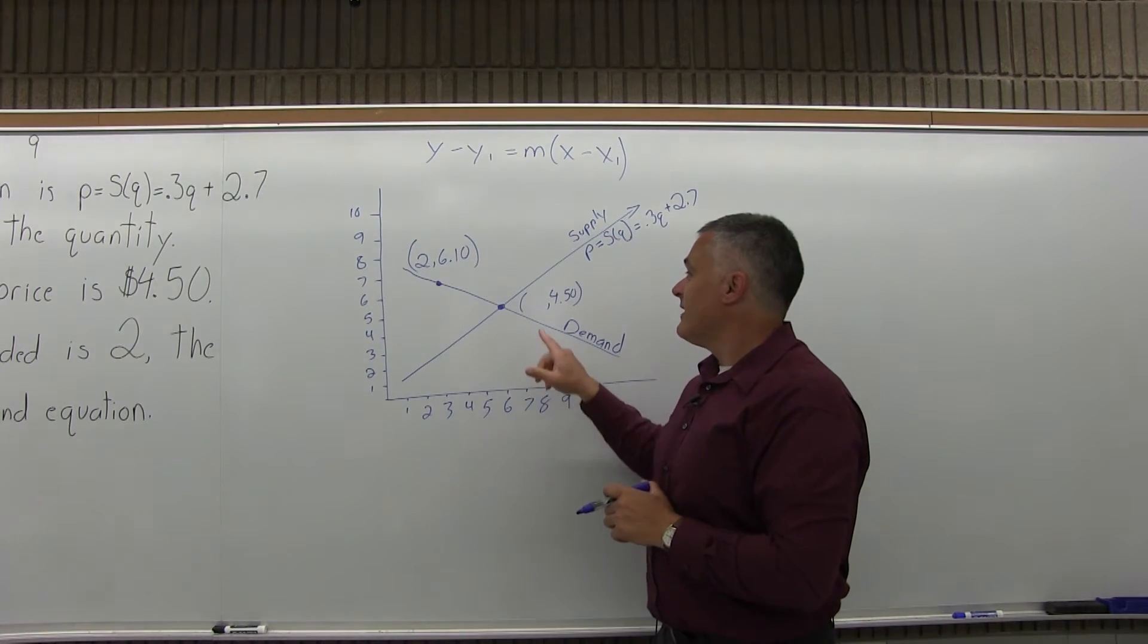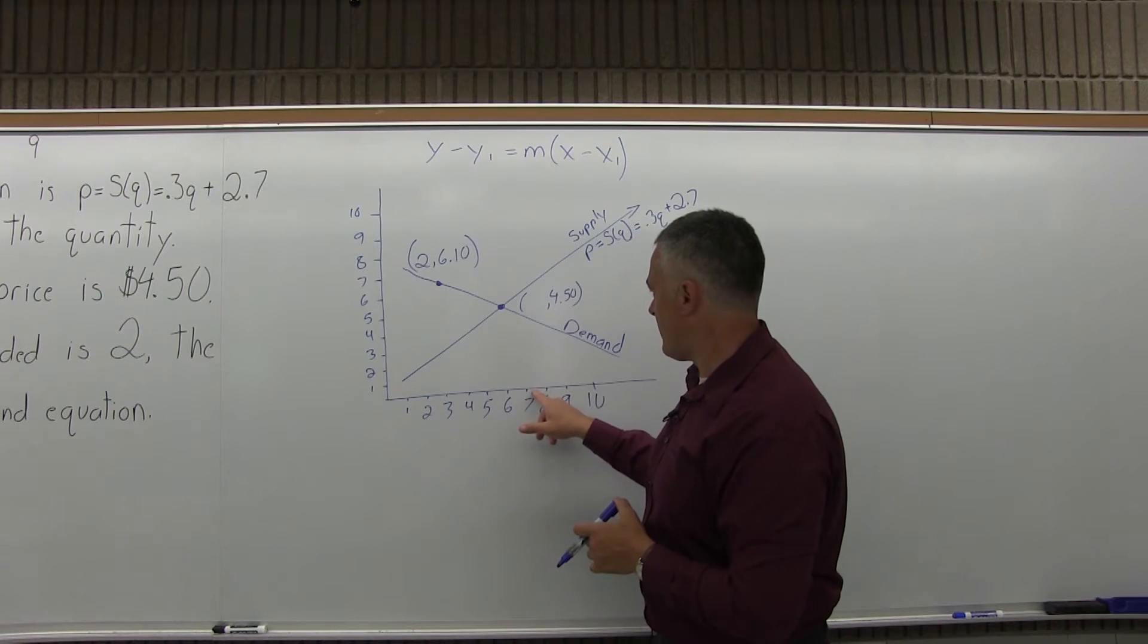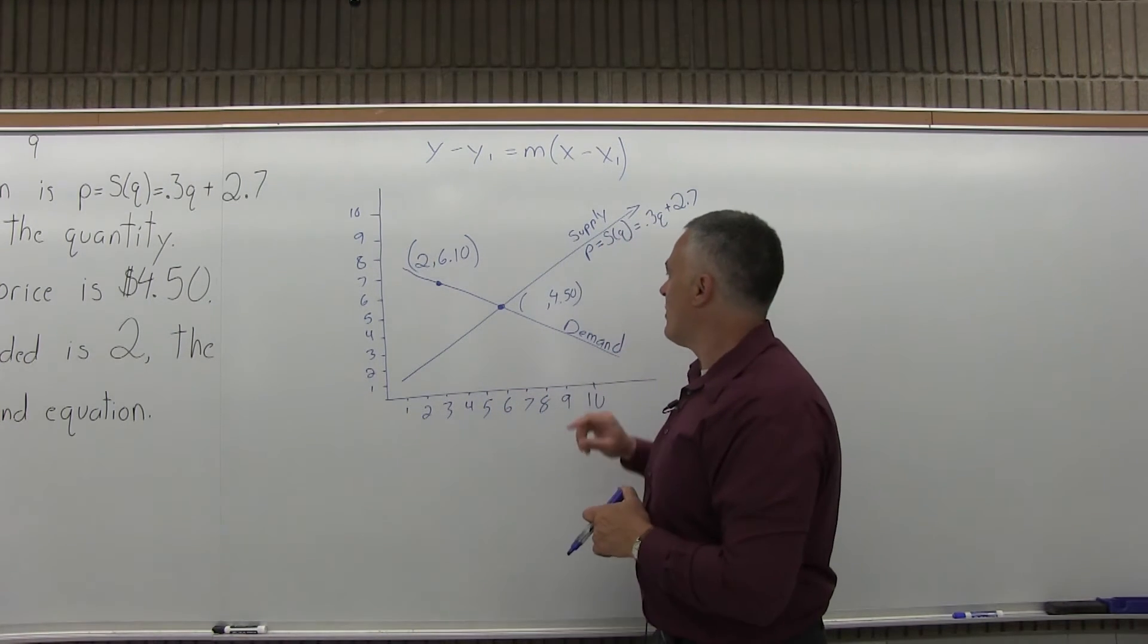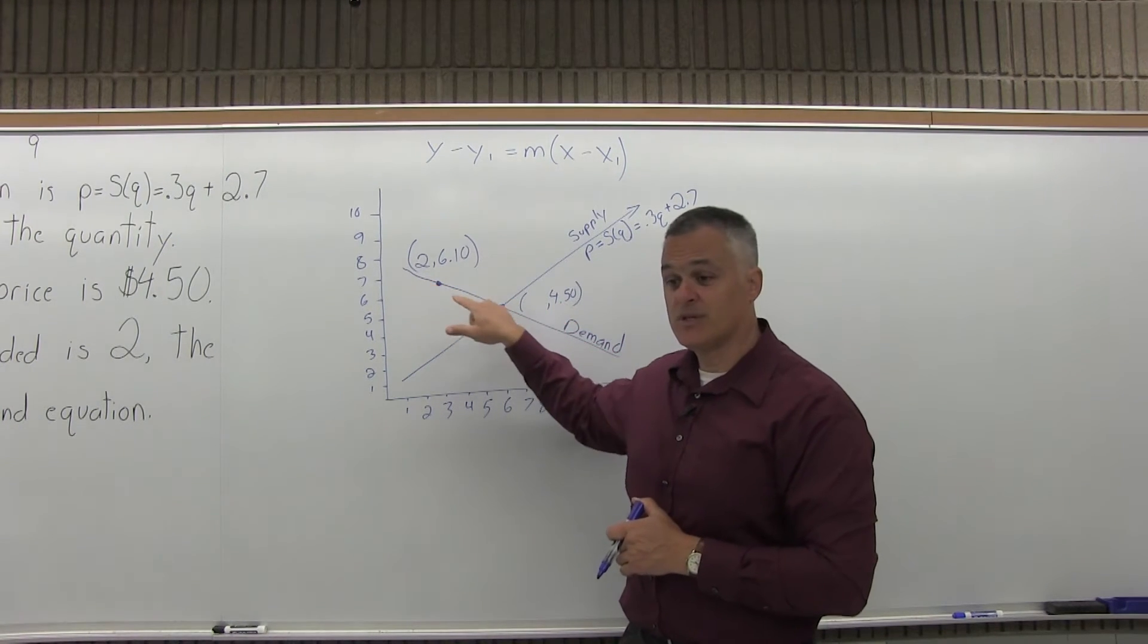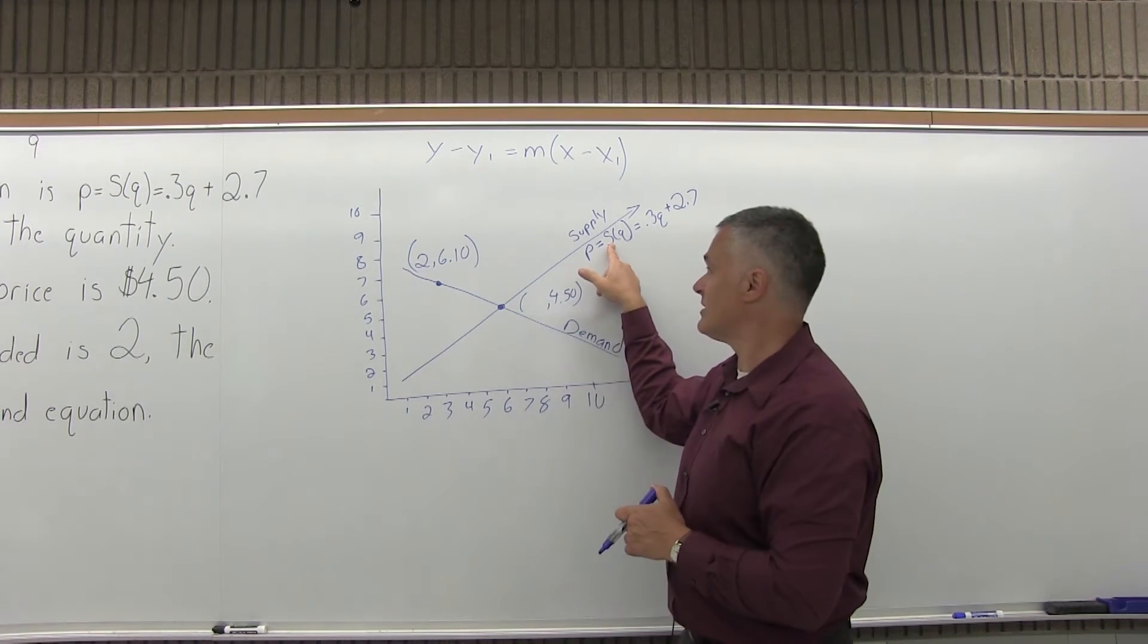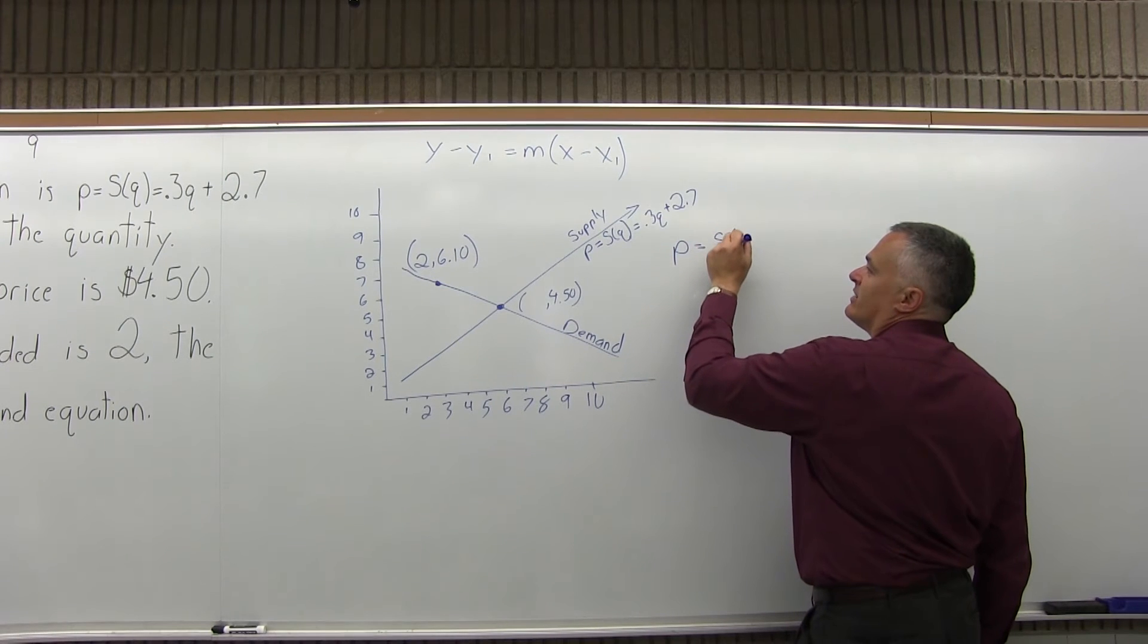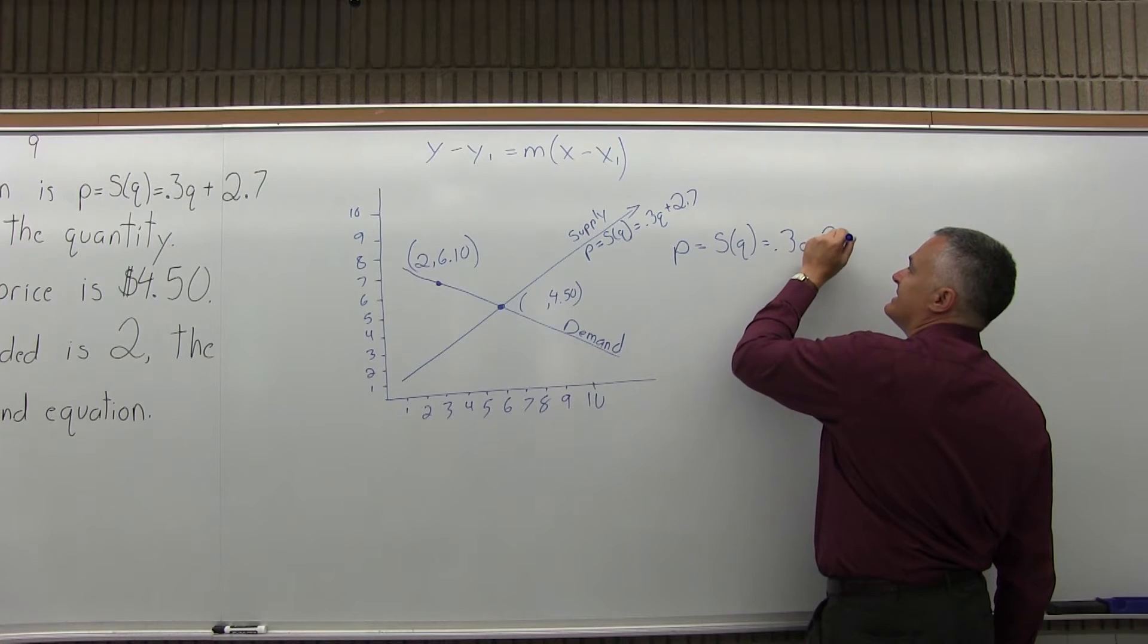How can we find the Q coordinate? This point with a Y coordinate of $4.50 is on both the supply and the demand. The supply, I can find any point I want because they gave me the equation. Let me take the supply equation and write it horizontally: P equals S(Q) equals 0.3Q plus 2.7.